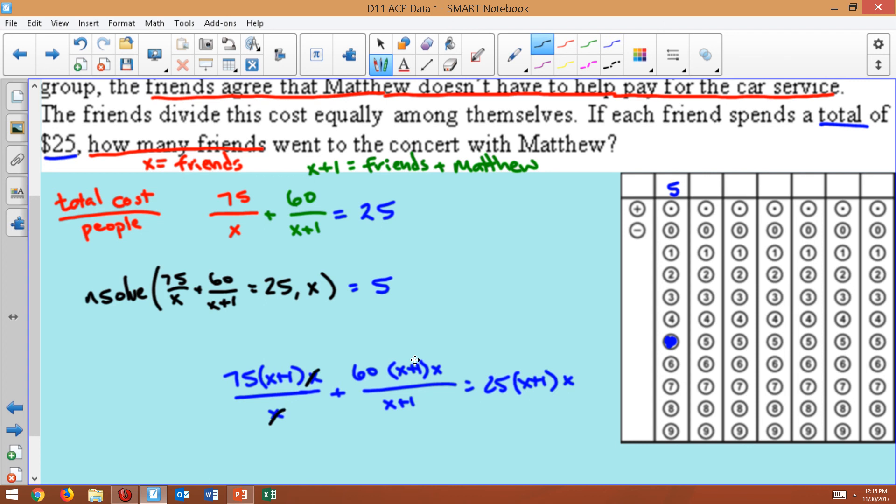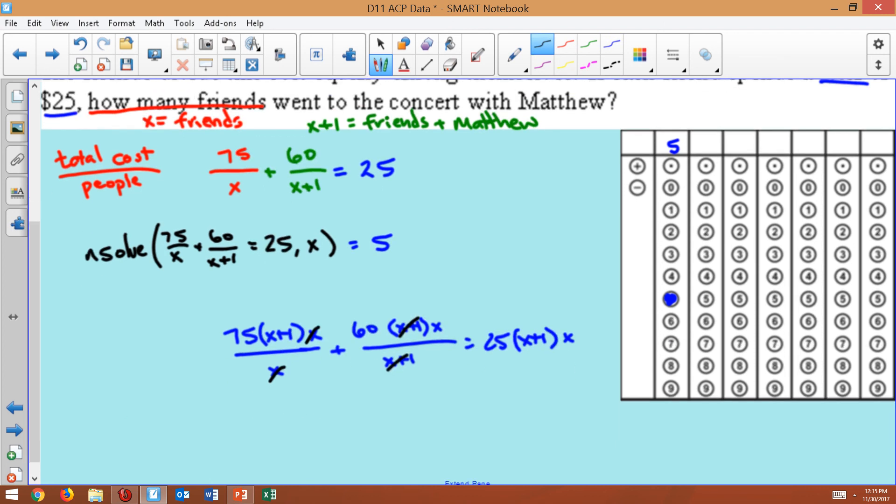And you would just go through the process of doing your algebra to solve. Over here, these X's would go away. And here, the X plus ones would go away. And so this would simplify the equation where you have 75X plus 75 plus 60X equals all this. And you would just go through solving like a quadratic. So that's the other technique of solving.